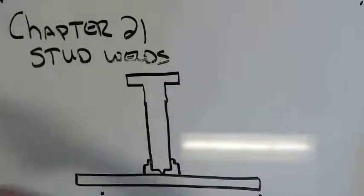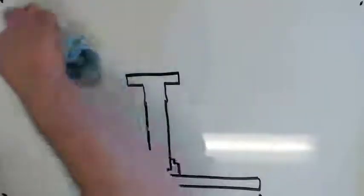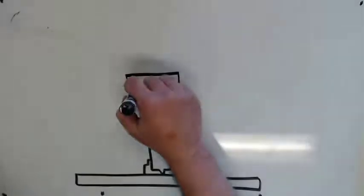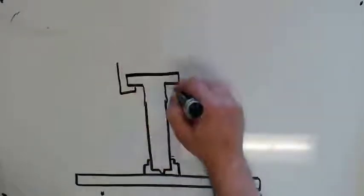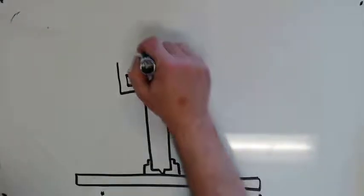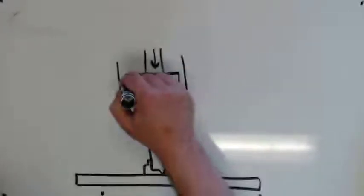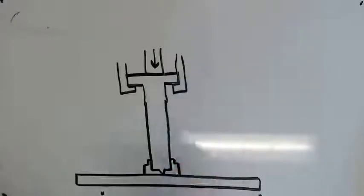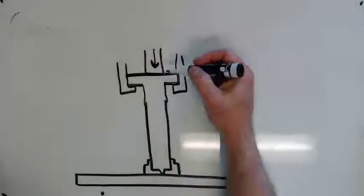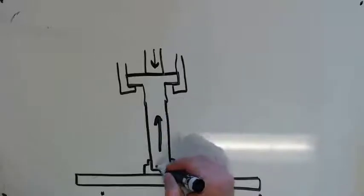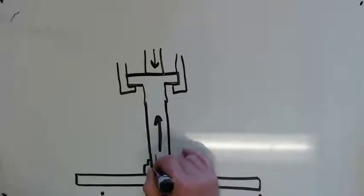What happens is, the stud gun holds onto the stud. And it's got a bunch of moving parts. But it grabs the stud up here, connects here and provides current. These are there to lift the stud up. And what happens is, you pull the trigger on a stud gun. It lifts the stud up.